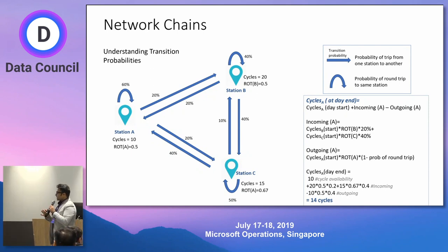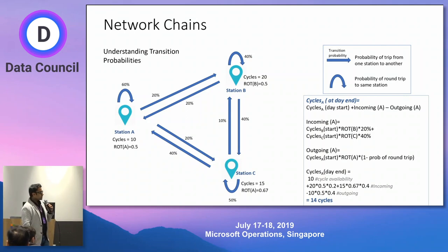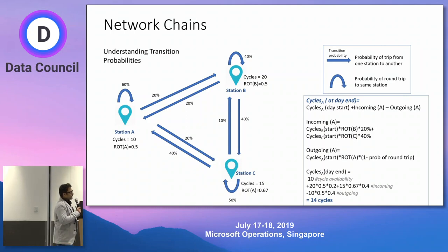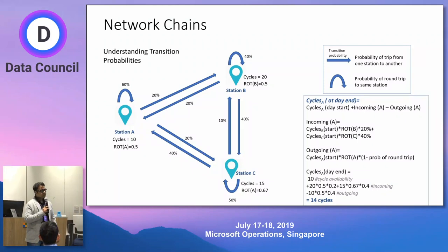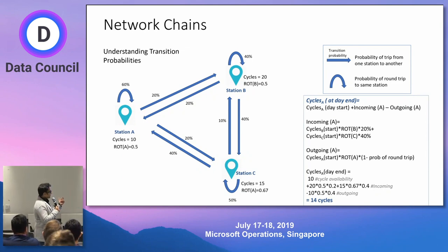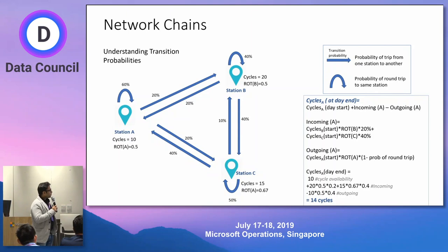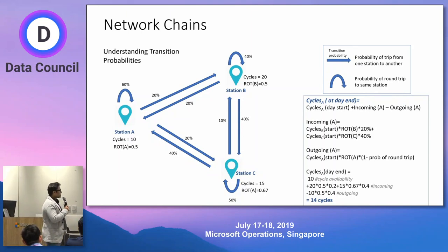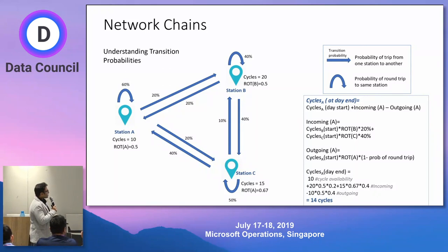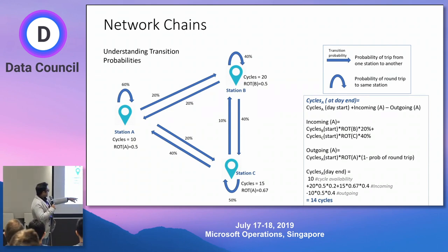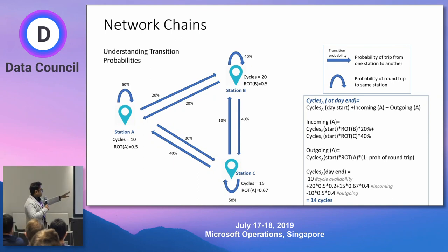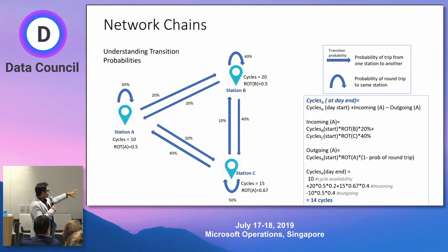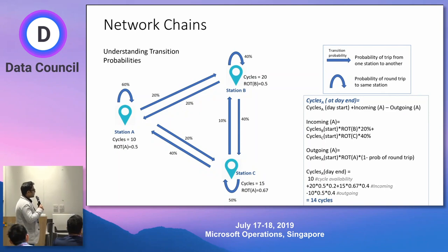Once we know this, we can predict how many cycles will end up at a station at the end of the day. We know the number of cycles at the start of the day and can calculate the probability of cycles coming from other stations using the transition probability. For example, cycles at the end of the day at station A equals cycles at the start of the day plus 20% from station B plus 40% from station C — so we end up with 14 cycles.